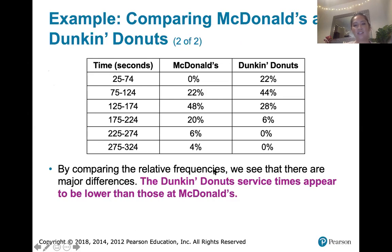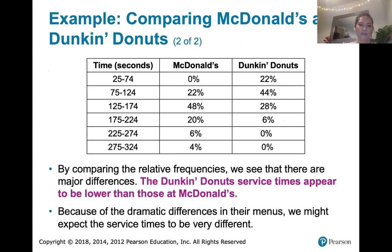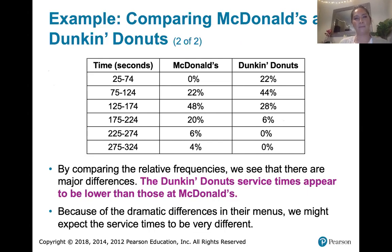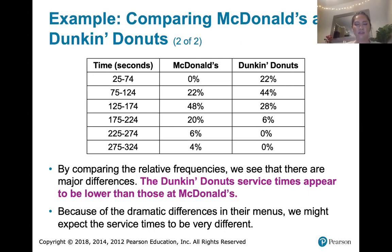Dunkin' Donuts service times tend to be lower than those at McDonald's. This makes a lot of sense — Dunkin' Donuts is just picking out a donut and giving it to someone; they don't have to cook anything. You would have to spend more time waiting at McDonald's because they're making you food, whereas at Dunkin' they probably made those donuts very early in the morning, or they're just grabbing a coffee or some milk to go with your donuts.